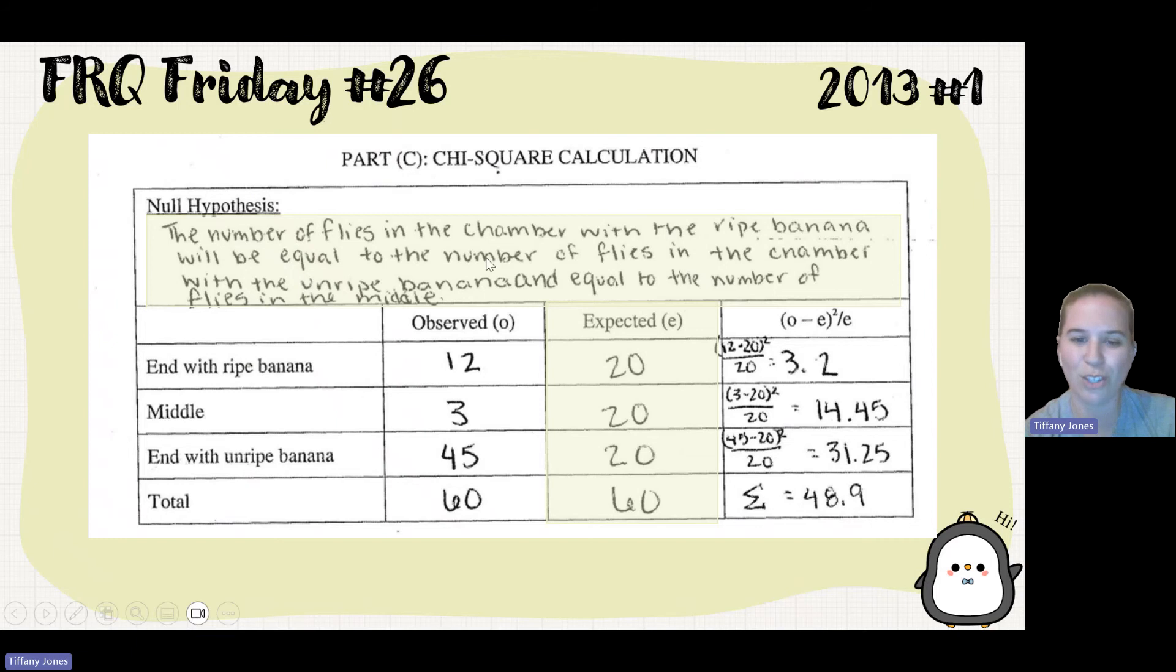They actually didn't care about the calculation. And so if you notice, the student actually messed this up here. They put 12 for the ripe banana and 45 for the unripe banana when those two should have actually been flipped. So their calculation in terms of the chart were actually incorrect, but that's okay.